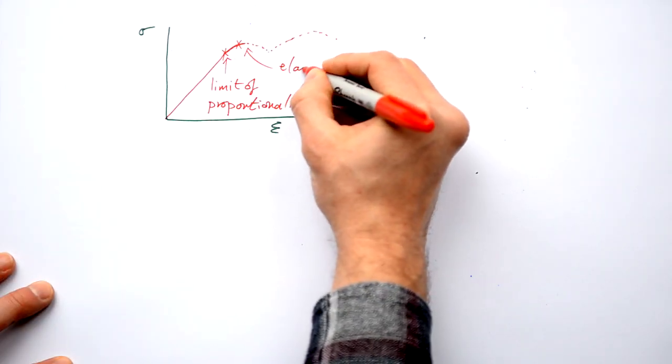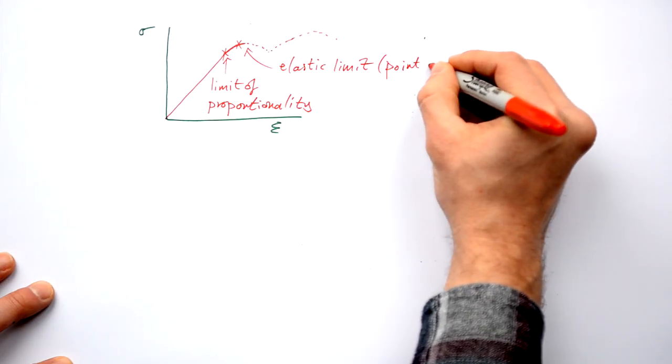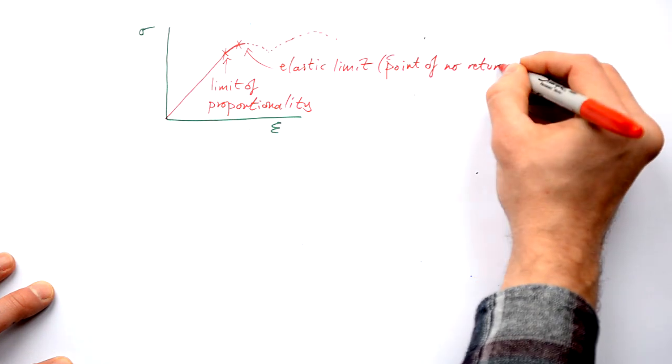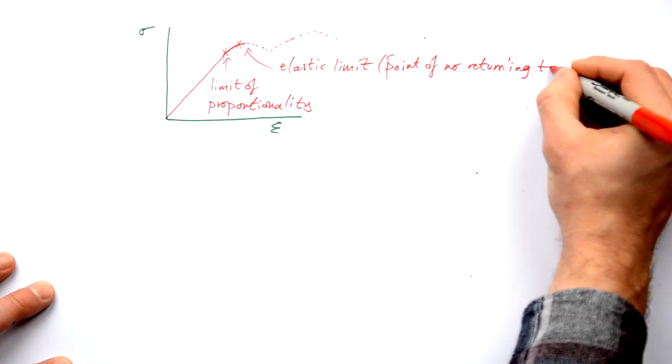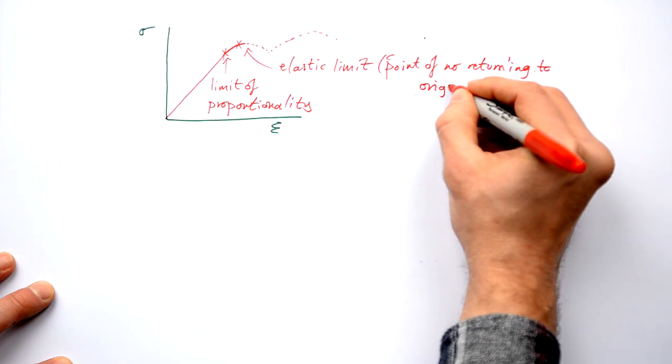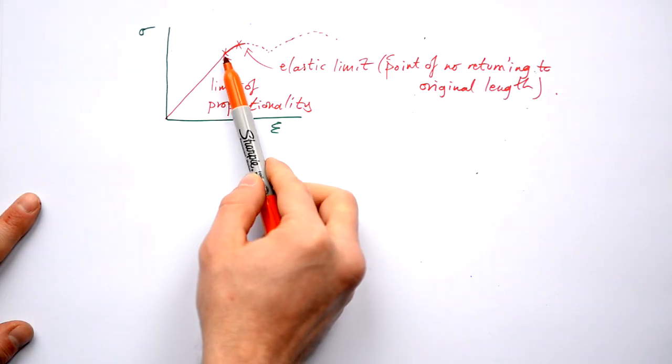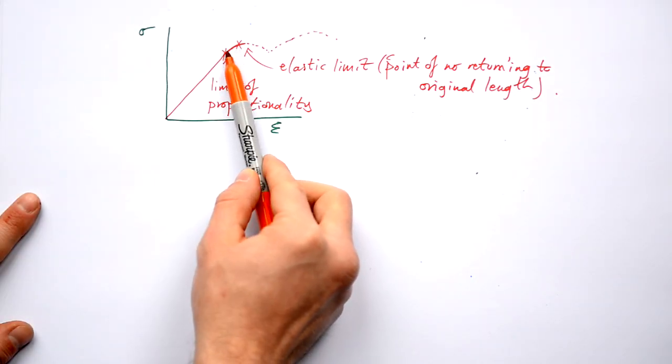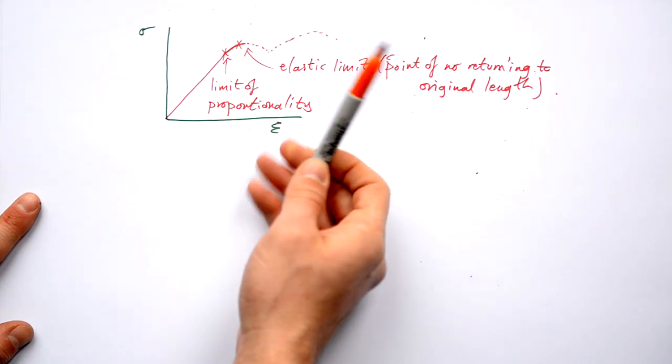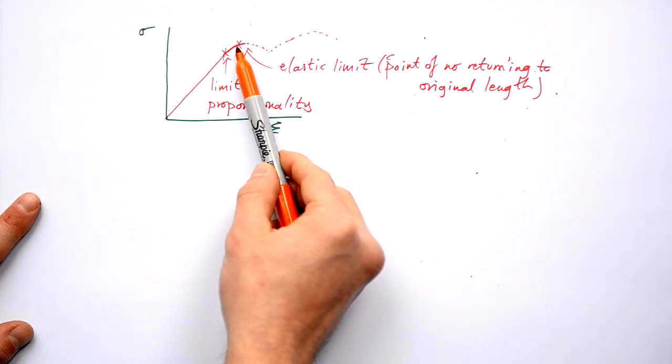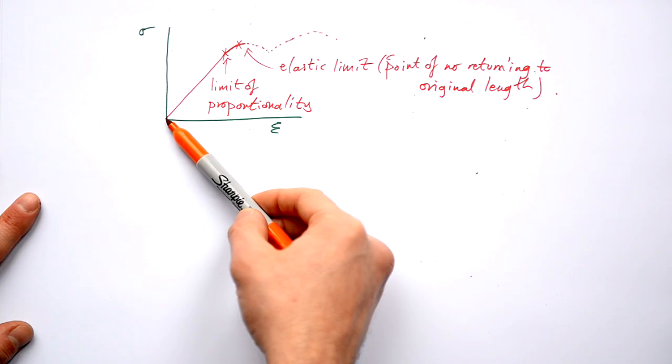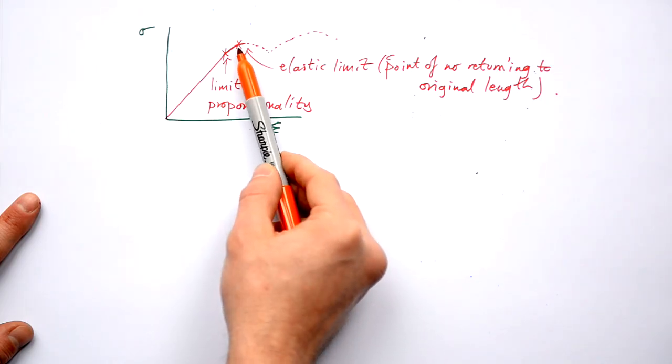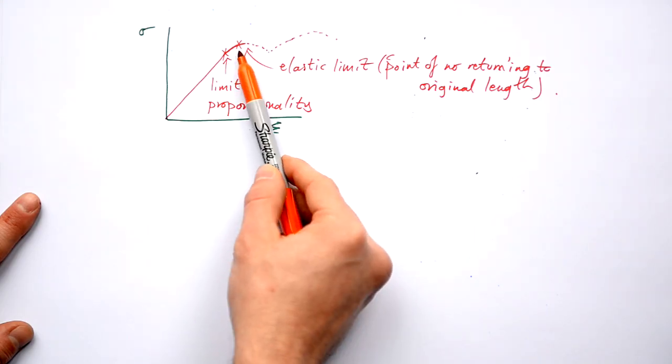This here is called the elastic limit. Call that the point of no return into original length. Even though we've gone slightly past the limit of proportionality, even up until that point, if we take the load off the wire, it will actually return to its original length again. Past this point, in other words, we say that it's still acting elastically.